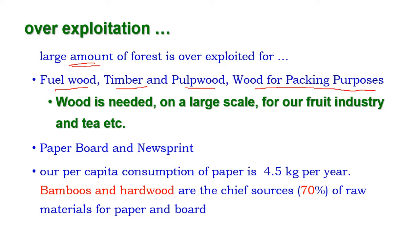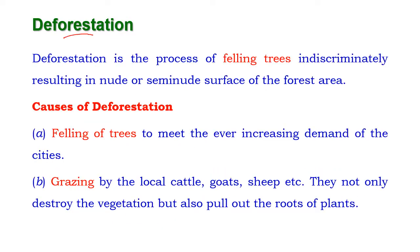A large amount of forest is over-exploited for fuel wood, timber, pulp wood, and wood for packing purposes and many other purposes. Wood is needed on a large scale for the fruit industry and tea. Forest resources are also over-exploited to make paper, board, and newsprint. The per capita consumption of paper has increased to 4.5 kg per year. About 70 percent of bamboo and hardwood are used to make paper and boards.